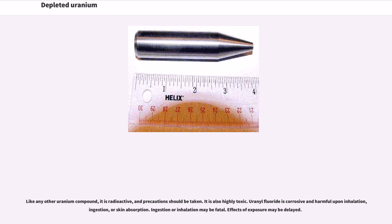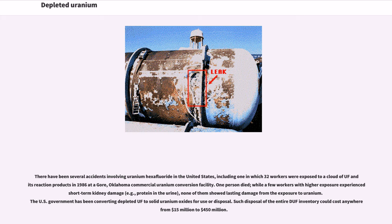Like any other uranium compound, it is radioactive, and precautions should be taken. It is also highly toxic. Uranyl fluoride is corrosive and harmful upon inhalation, ingestion, or skin absorption. Ingestion or inhalation may be fatal, and effects of exposure may be delayed. There have been several accidents involving uranium hexafluoride in the United States, including one in 1986 at a commercial uranium conversion facility in Agore, Oklahoma, in which 32 workers were exposed to a cloud of UF₆ and its reaction products. One person died, while a few workers experienced short-term kidney damage. The U.S. government has been converting depleted UF₆ to solid uranium oxides for use or disposal, with costs estimated from $15 million to $450 million.